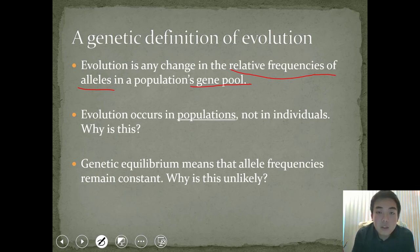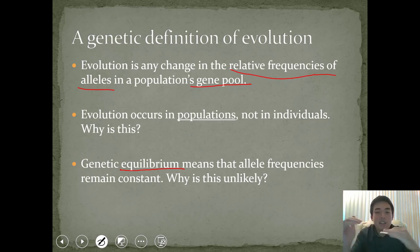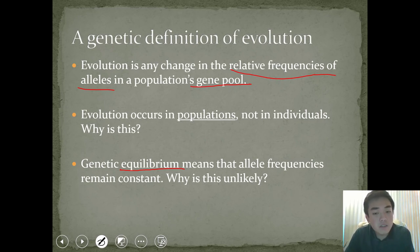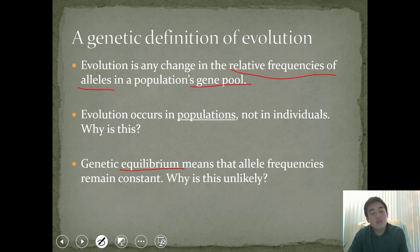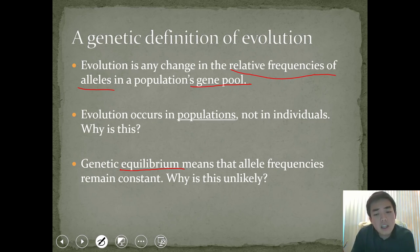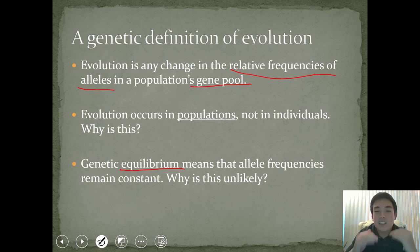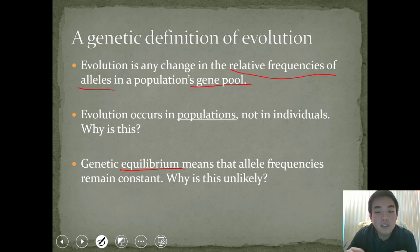Genetic equilibrium means that allele frequencies remain constant — there is no push or pull on allele frequency. This is very unlikely. Take a moment, pause this video if you need to, and hypothesize: what is it about the transfer of genetic material that may or may not result in genetic equilibrium? Consider what factors might change allele frequencies and why it's unlikely that they remain constant. Prepare an answer and we'll discuss it in class.